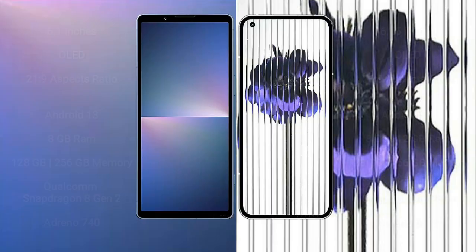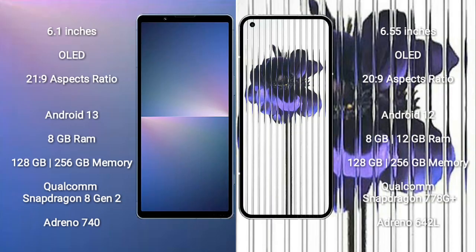Sony X-Player 5 Mark 5 comes with a 6.1-inch OLED display and aspect ratio 21:9. Nothing Phone 1 comes with a 6.55-inch OLED display and aspect ratio 20:9.